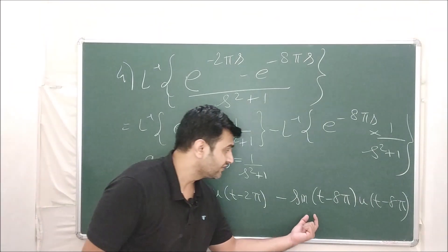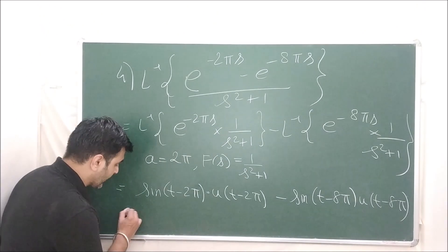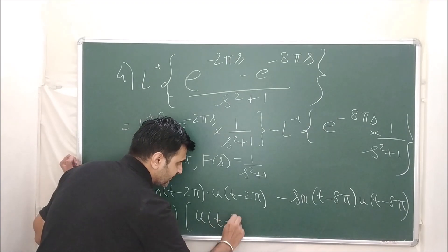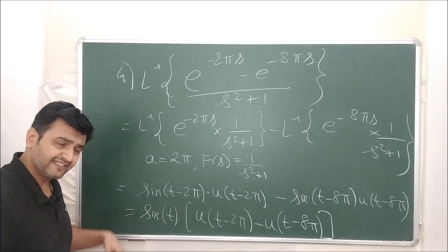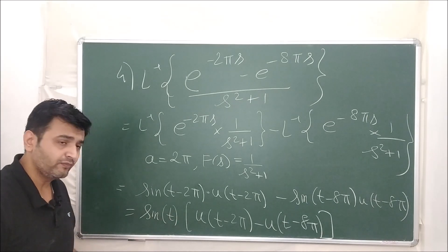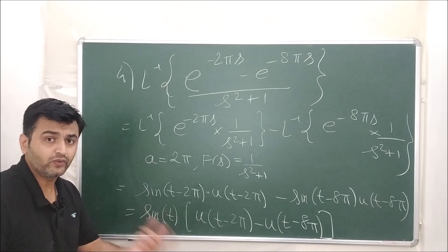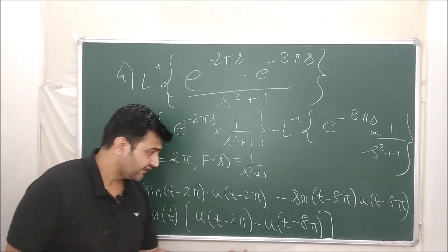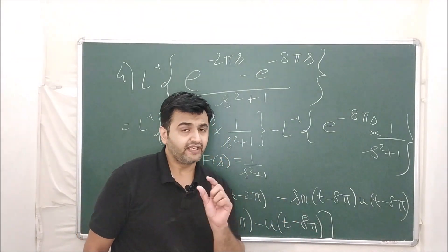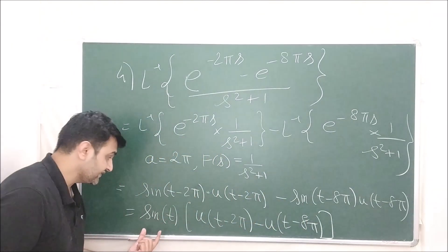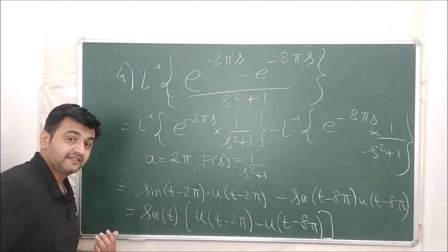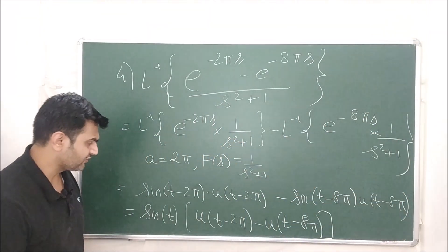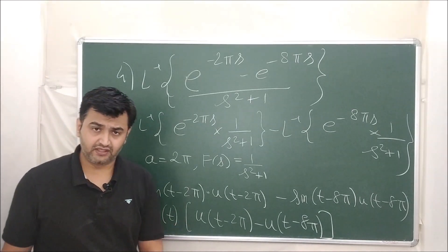One can further simplify: sin(t − 2π) = sin(t) and sin(t − 8π) = sin(t). So taking sin(t) common, what remains is [u(t − 2π) − u(t − 8π)]. Interpreting: when t is from 2π to 8π, u(t − 2π) = 1 and u(t − 8π) = 0, so the answer is sin(t). For 0 to 2π the answer is 0, and for 8π to infinity the answer is also 0. I hope the concept is clear.